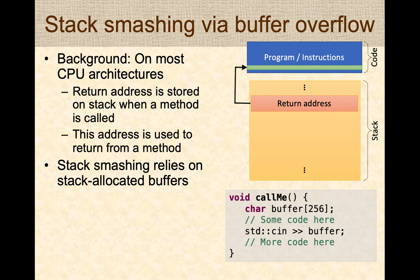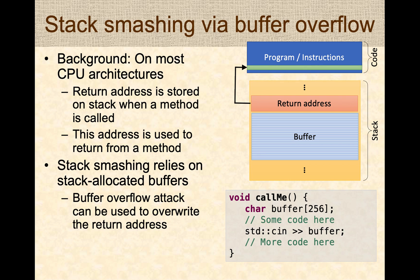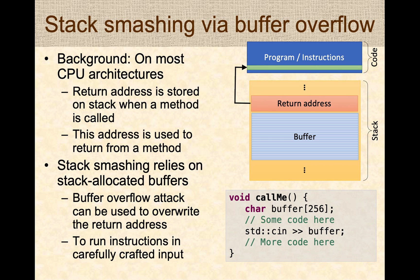Stack smashing relies on the fact that some buffers, when defined in a program, are allocated on the stack. So in a method like 'call me', first you have the return address, and then the buffer is allocated right after it. A malicious user who knows this setup can use a buffer overflow attack to overwrite the return address stored right after the buffer.